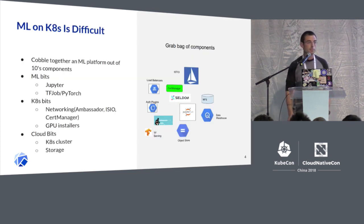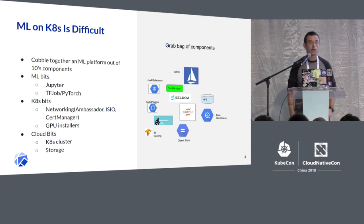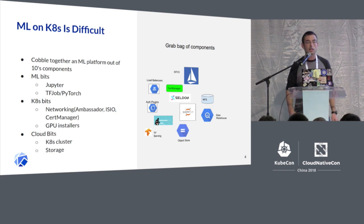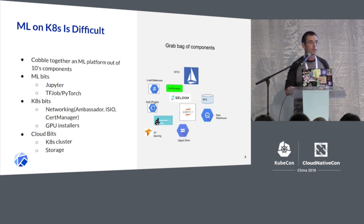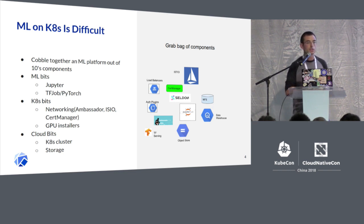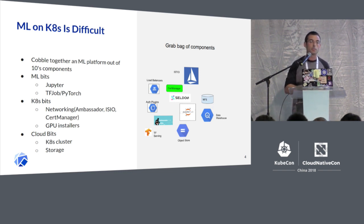This slide illustrates one of the core problems we're trying to solve with Kubeflow. Right now, machine learning on Kubernetes is very difficult because if you're trying to set up Kubernetes to do machine learning, you end up having to build the platform yourself by cobbling together different services and components. There are basically three types of components you have to combine. The first is ML-specific components — applications like Jupyter that enable data scientists, and also custom controllers we're developing as part of Kubeflow for doing things like running distributed training on Kubernetes.